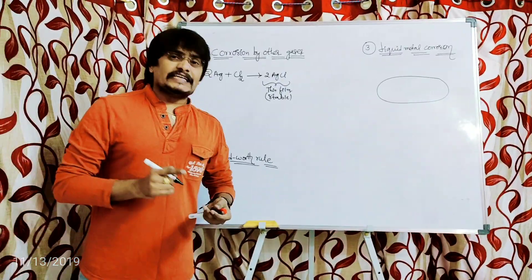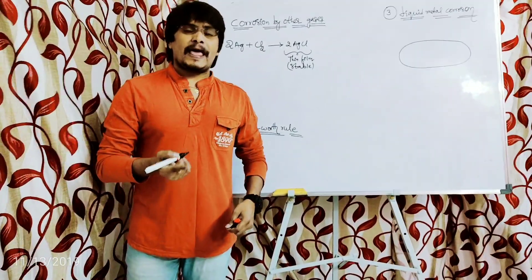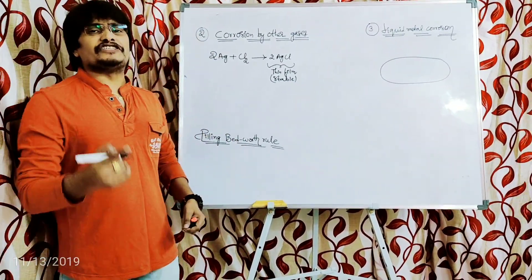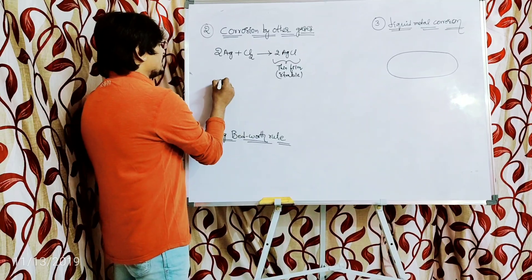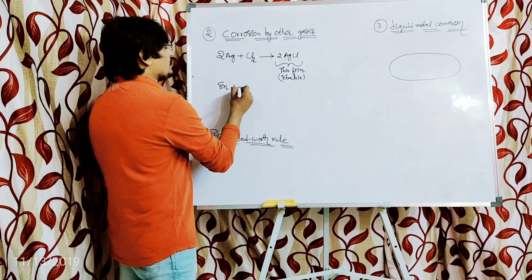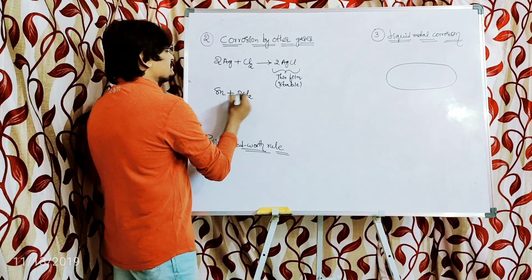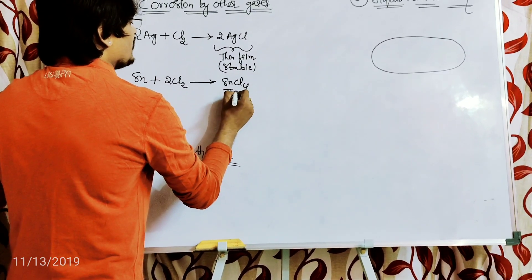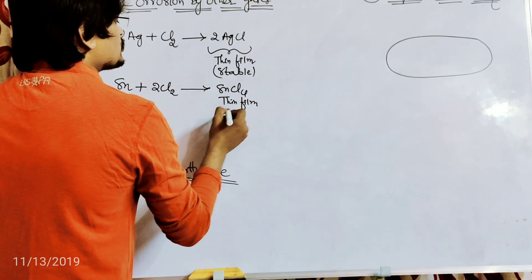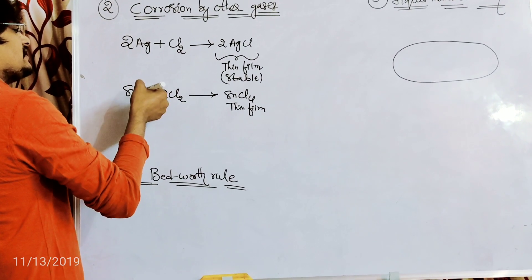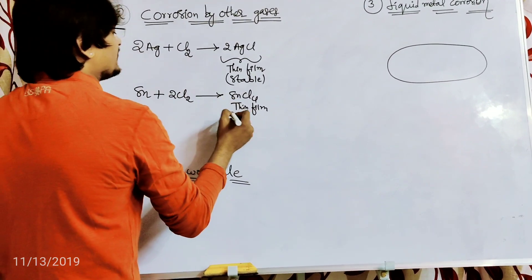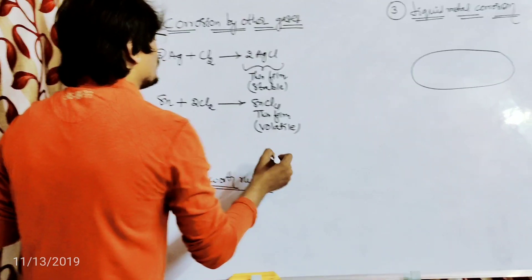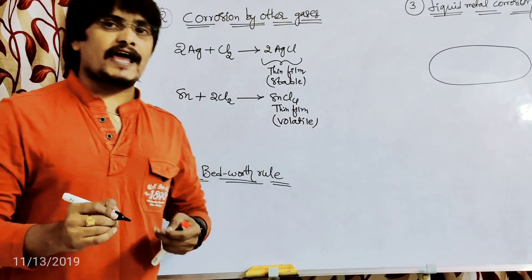In a similar fashion, tin also has affinity towards chlorine gas. As tin has affinity towards chlorine gas, the chlorine gas attacks the tin surface. Two moles of chlorine gas attack the tin metal surface, resulting in the formation of tin tetrachloride (SnCl₄). This tin tetrachloride is a thin film formed on the surface of the tin metal when attacked by chlorine gas, and this thin film is volatile.